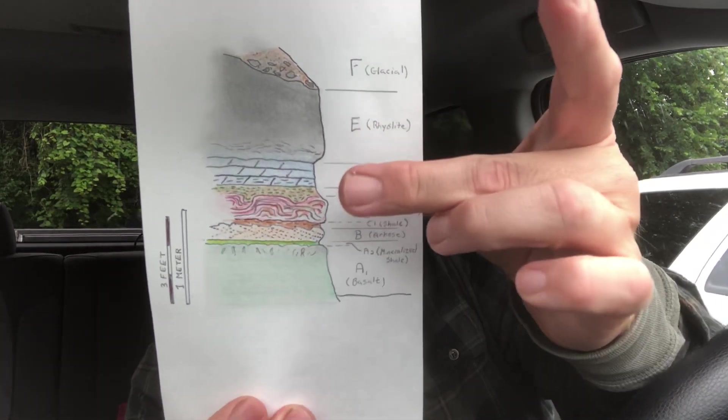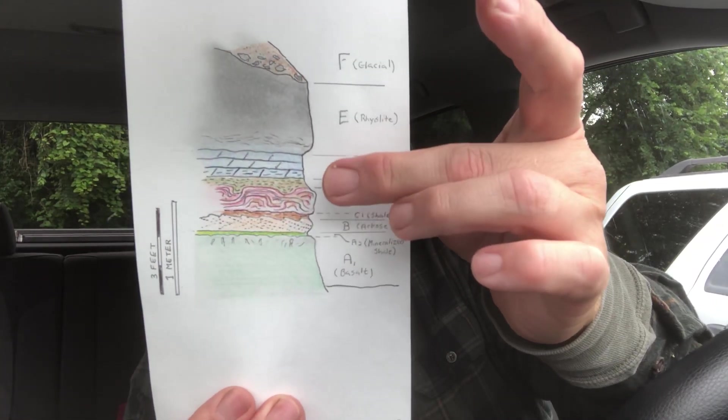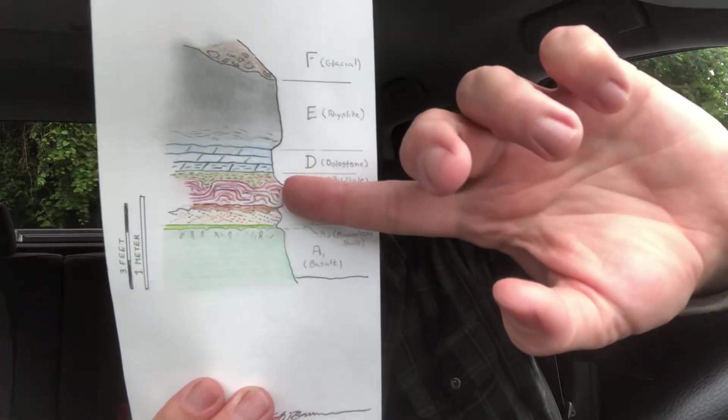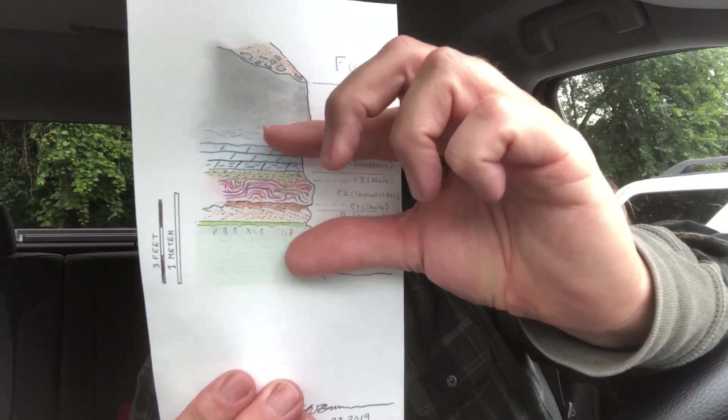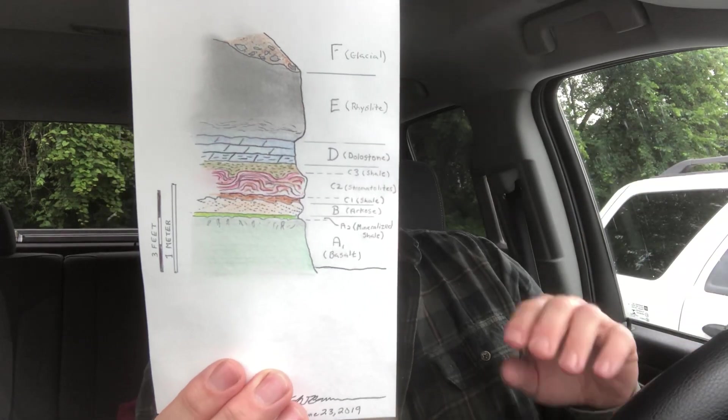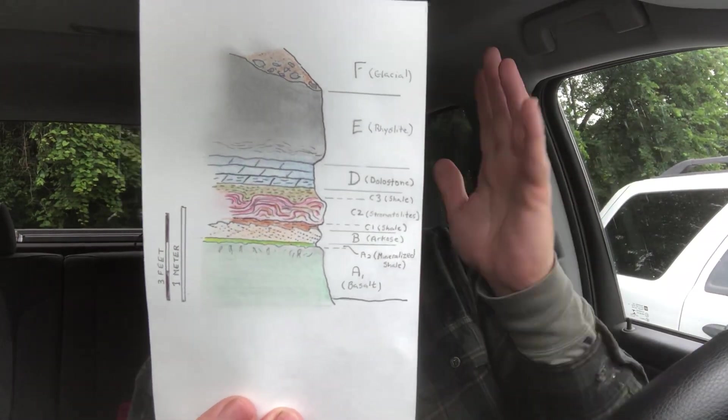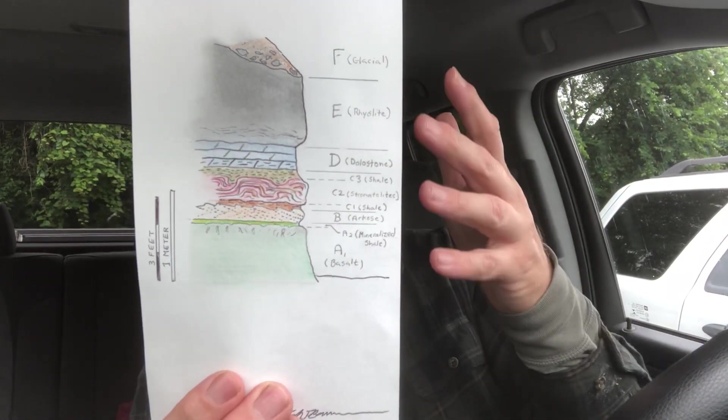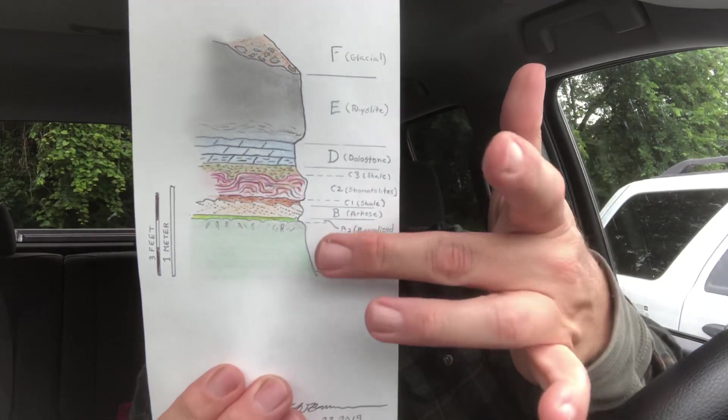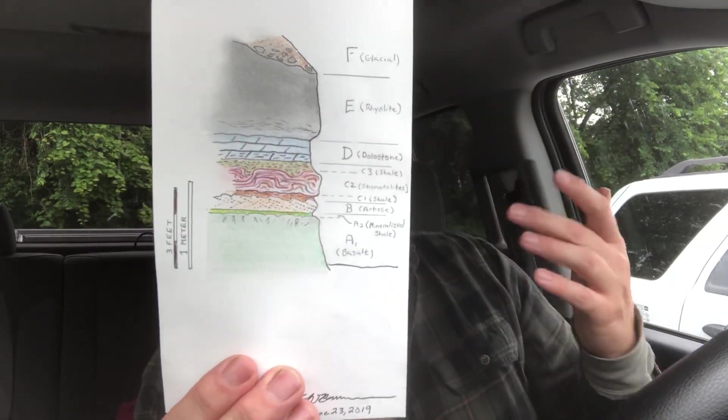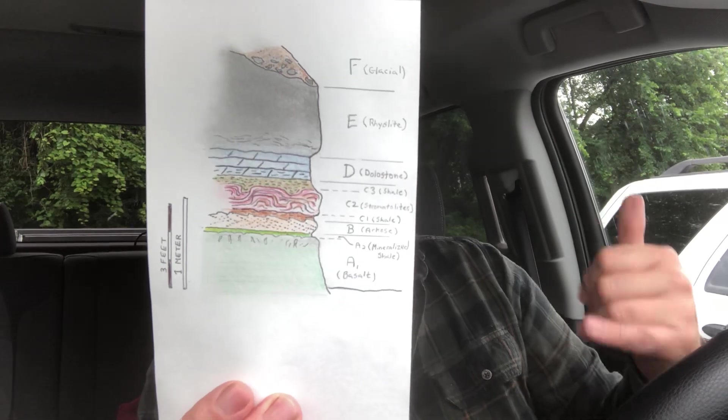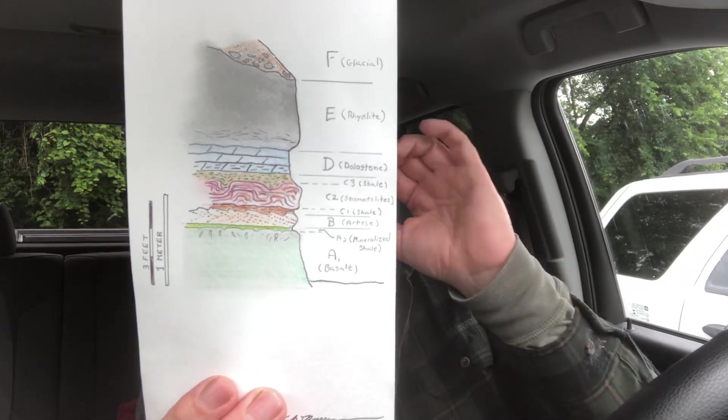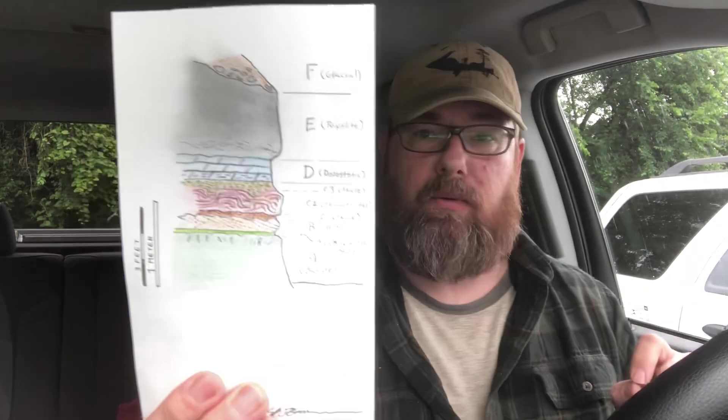This was not exposed, never been seen in outcrop. Here you have stromatolites and the age of this is in question. Say people have tried to date it and have come up with nothing. Some people thought it was shortly after this and other people think this might be almost Cambrian, just neo-Proterozoic, right up to that 541 million years.